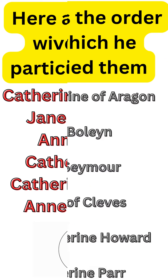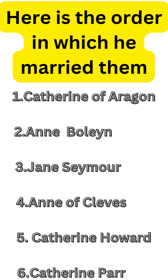Here is the order in which he married them. 1: Catherine of Aragon. 2: Anne Boleyn. 3: Jane Seymour. 4: Anne of Cleves. 5: Catherine Howard. 6: Catherine Parr.